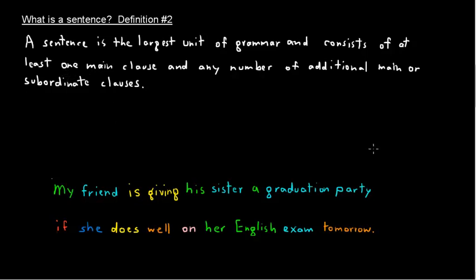Let's look at this sentence. Maybe it's easier to just use an example. Let's look at the first part: 'My friend is giving his sister a graduation party.' That could stand by itself, so that is a main clause.